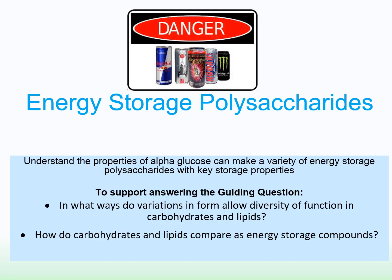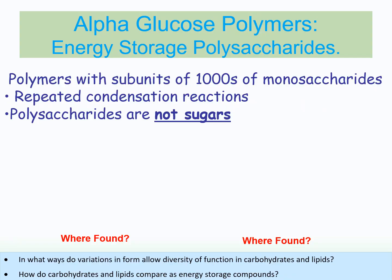Now let's look at polysaccharides — long chains of carbohydrates. The first type is energy storage polysaccharides. In animals, this is glycogen; in plants, this is starch. Both use alpha glucose, combined by repeated condensation reactions removing water to form glycosidic bonds. These polysaccharides are not sugars: monosaccharides are sweet and soluble, affecting osmosis, whereas these storage polysaccharides are not sweet and are insoluble, so they have no osmotic effect.